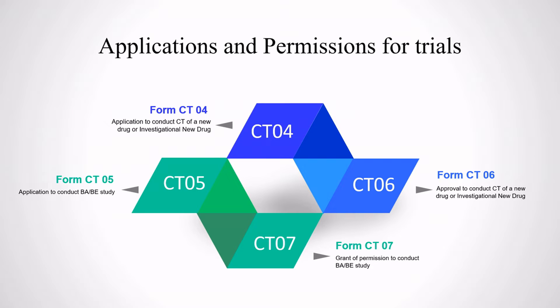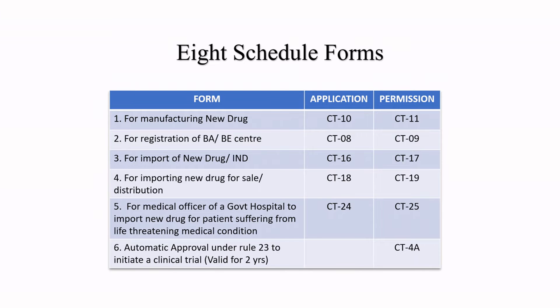If you want to apply for a BA/BE trial, then you fill Form CT-04 and you get the approval in the form of Form CT-07. You should clearly remember which particular form stands for the application and which stands for the permission. These forms are elaborately mentioned in Schedule 8. For manufacturing of the new drug, you have to apply through Form CT-08 and you get the permission through Form CT-11.